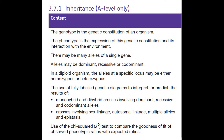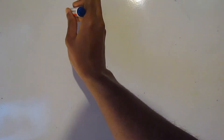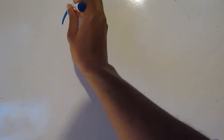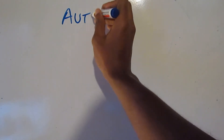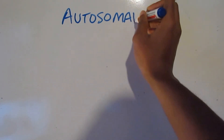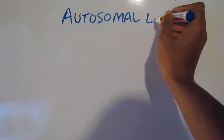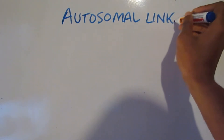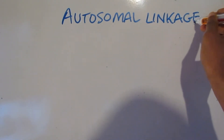Hello there. This video matches up with spec point 3.7.1 inheritance and specifically the section on autosomal linkage. In our last lesson, we looked at sex linkage and how genes can be specifically located on the sex chromosomes. But now we're looking at a different version called autosomal linkage.